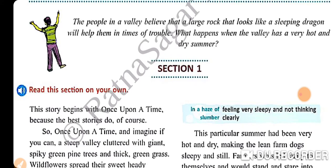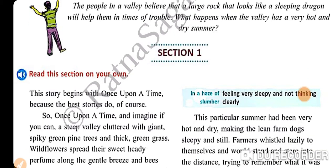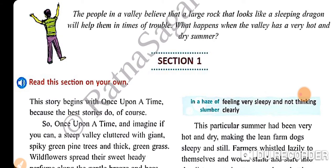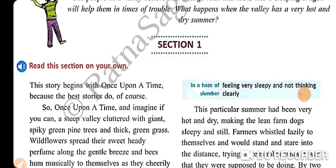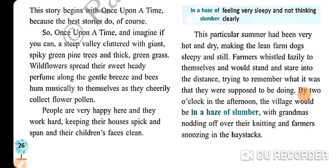The people in a valley believe that a large rock that looks like a sleeping dragon will help them in times of trouble. What happens when the valley has a very hot and dry summer? So it's just an introduction — the people living in this valley believed that a sleeping dragon made of a large rock will help them in times of trouble, and we will see what happens when the valley has a very hot and dry summer.